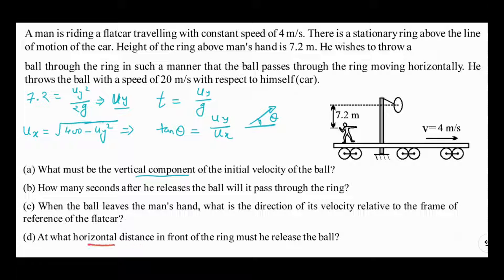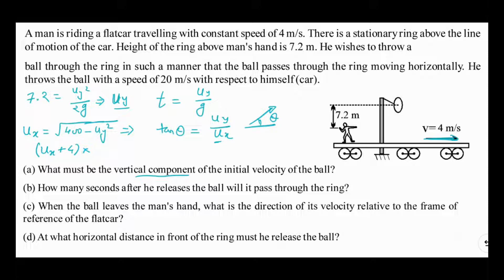In the last part, we find the horizontal distance in front of the ring at which the man must release the ball. We need to account for the flat car's velocity: with respect to the ground, the ball moves horizontally at ux + 4 meters per second. Multiplying this horizontal speed by the time of flight (uy / g) gives the horizontal distance the ball covers before reaching the ring, which is also the distance at which the man should release the ball.